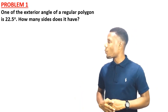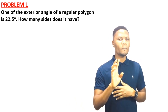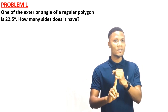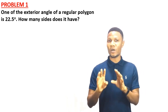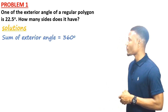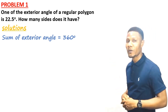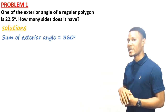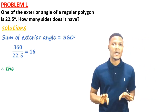Problem 1: One exterior angle of a regular polygon is 22.5°. How many sides does the polygon have? Since it's a regular polygon, all angles are equal. The sum of exterior angles is 360°, so we divide 360° by 22.5°, which gives us 16. The polygon has 16 sides.